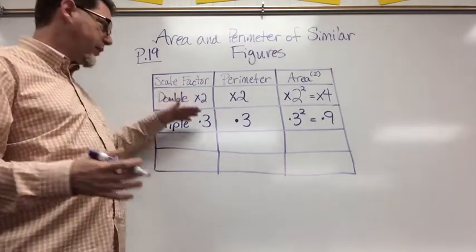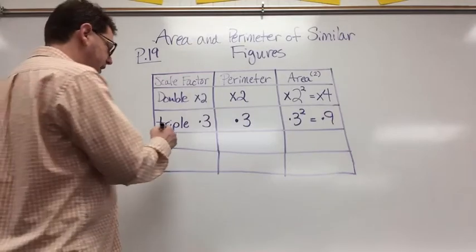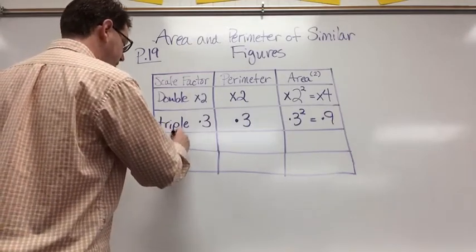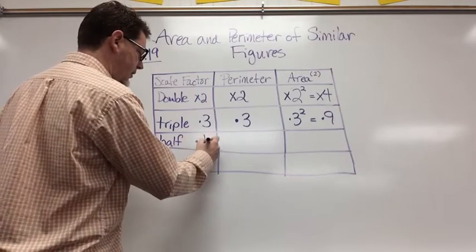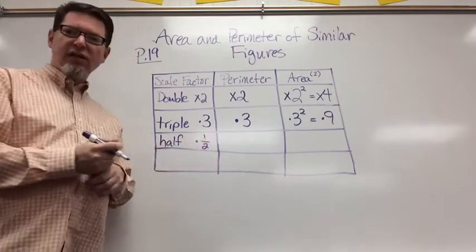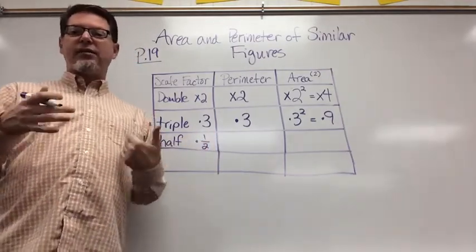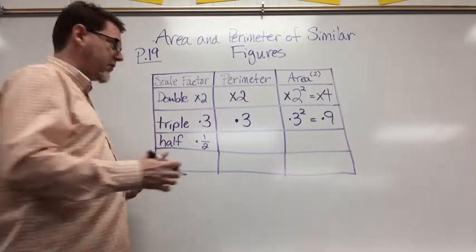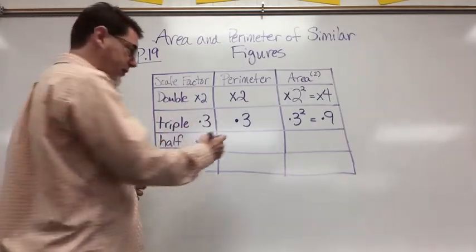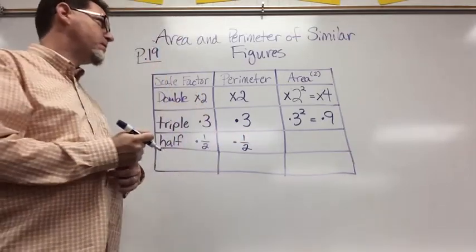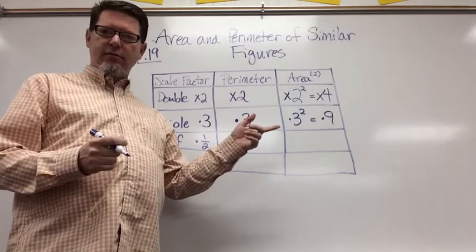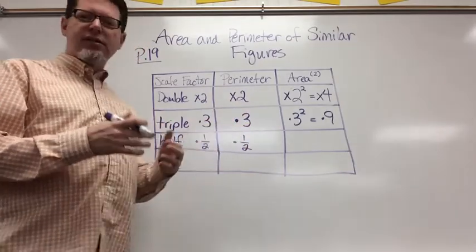Now let's talk about reductions. Both of those are enlargements. Let's talk about a reduction. Let's say if I go half the size and that's the same as times one-half. So if I take half the size of the sides of my figures then the perimeter is going to be half the perimeter, but what about area?